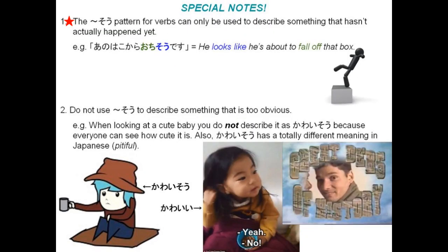Take note that the so pattern for verbs can only be used to describe something that hasn't actually happened yet. For example: Ano hako kara ochisou desu — it looks like he's about to fall off that box. Also, do not use sou to describe something that is too obvious. For example, when looking at a cute baby, you do not describe it as kawaisou, because everyone can see how cute it is.